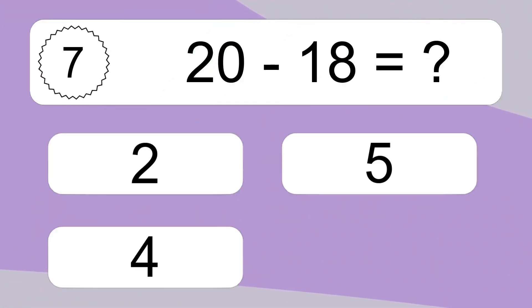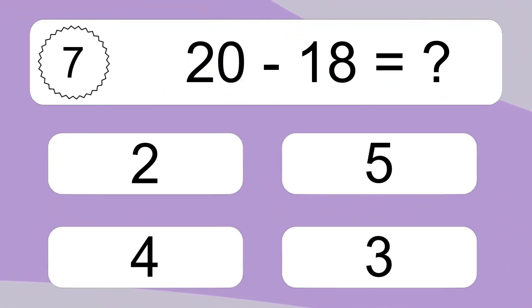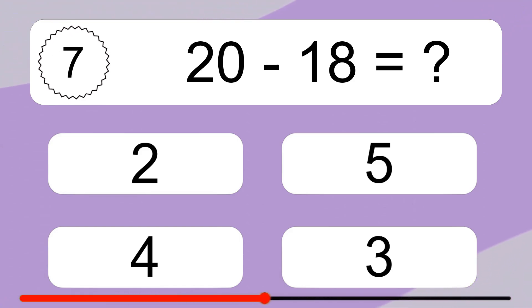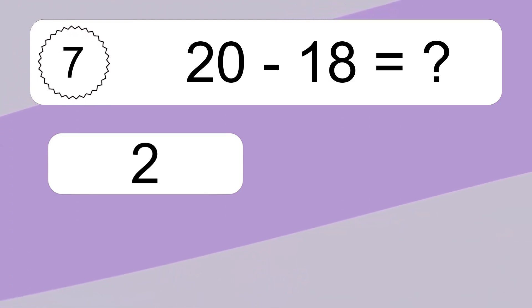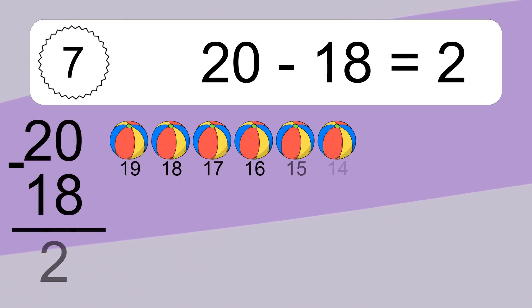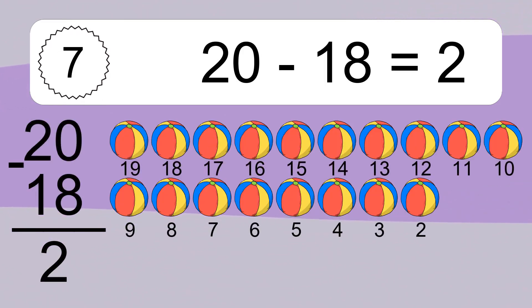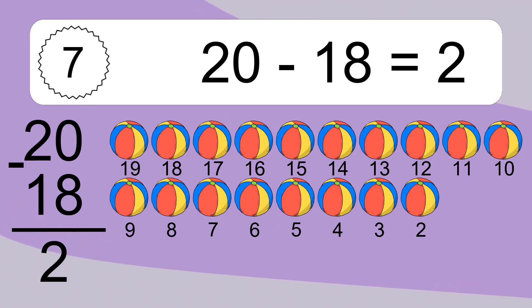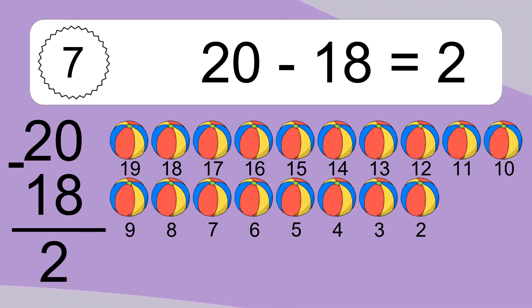20 minus 18 equals what? 20 minus 18 equals 2. Let's count it. 19, 18, 17, 16, 15, 14, 13, 12, 11, 10, 9, 8, 7, 6, 5, 4, 3, 2.